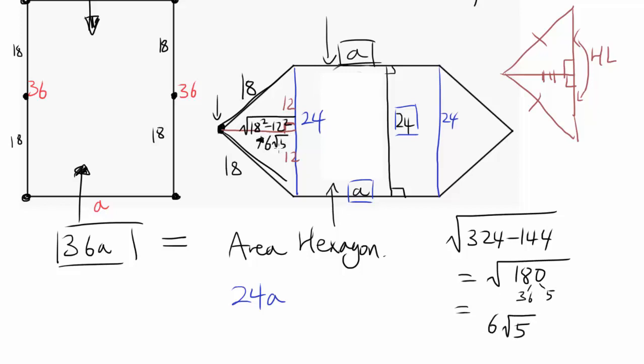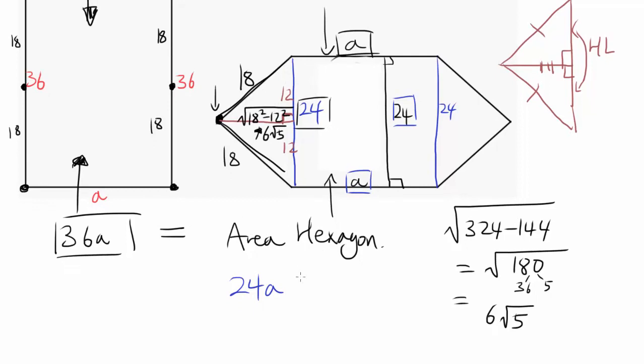So this height, not hypotenuse, this height is 6 times square root of 5, base is 24. So the area of the triangle is going to be 24 times 6 times square root of 5 over 2.